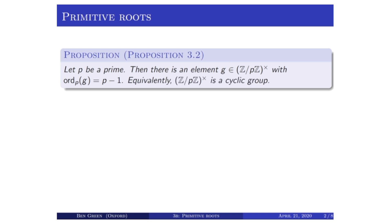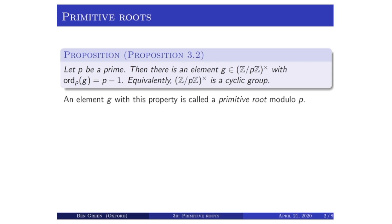Equivalently, this means that z mod p z star is a cyclic group, because z mod p z star is a group of size p minus one — since phi of p is p minus one — and therefore if there's an element in it of order p minus one, it must be a cyclic group of that size. This is the main proposition we'll be proving in this section. An element g with this property is called a primitive root modulo p, and we use that term interchangeably for either an integer g whose reduction mod p has this property, or for an element of z mod p z star with this property.